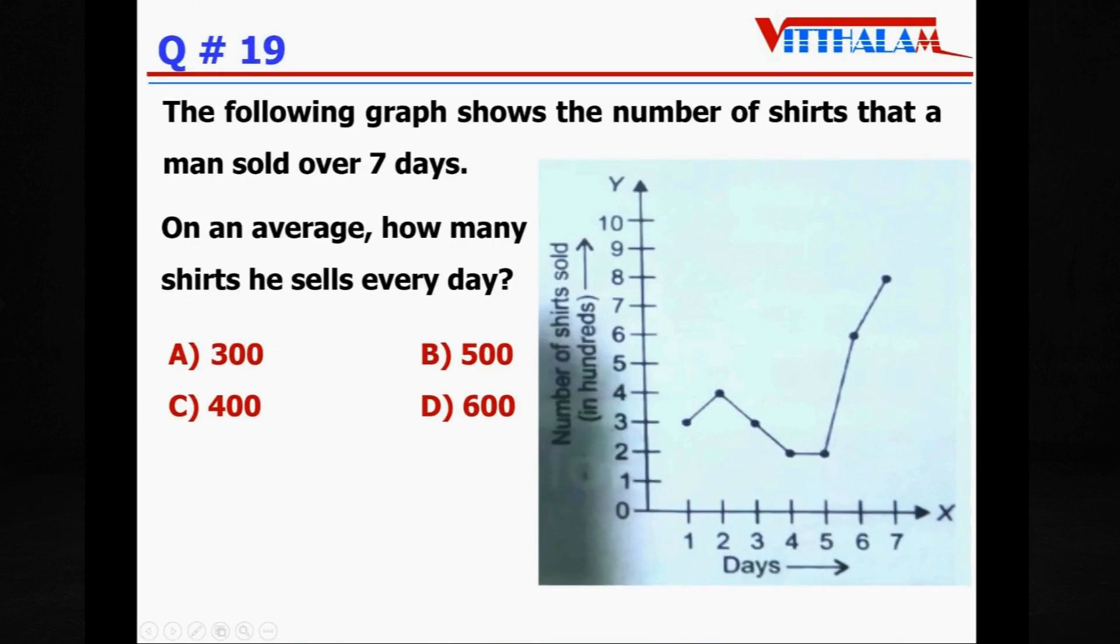Next. The following graph shows the number of shirts that a man sold over 7 days, so days on x-axis and number of shirts sold in hundreds on y-axis. On an average, how many shirts he sells every day? So we have to total it and then 1 by 7. Average means number of days, that is 7. So let's total it: 3, 4, 3, 2, 2, 2, 6, 8.